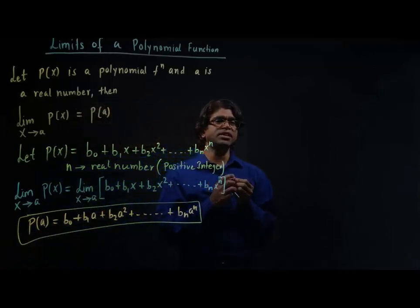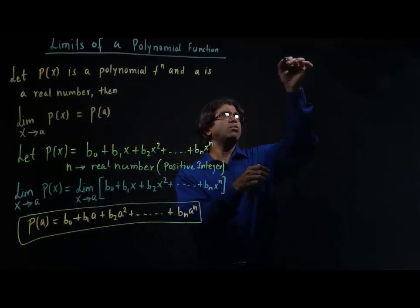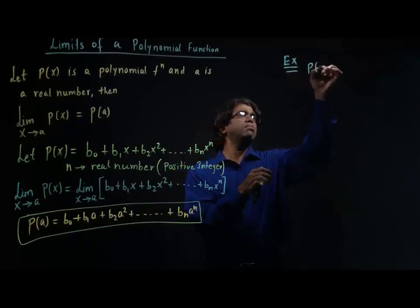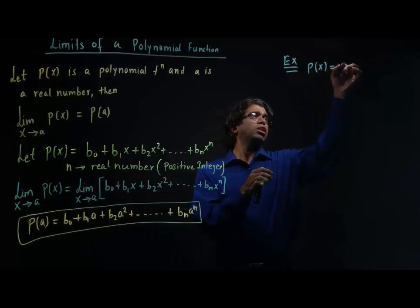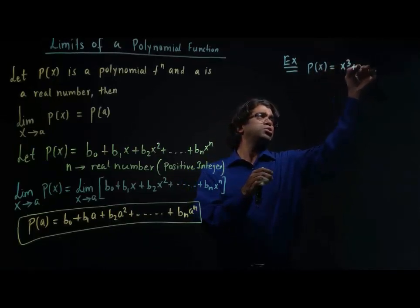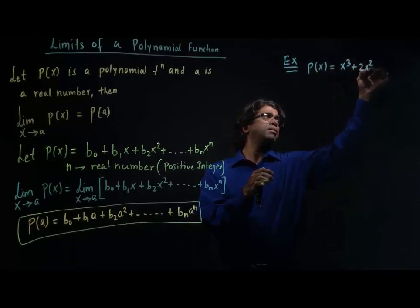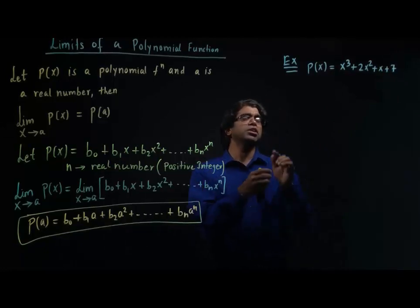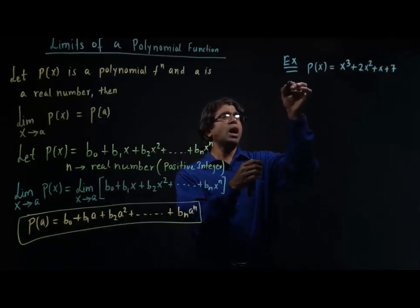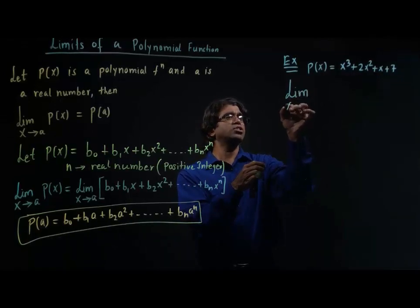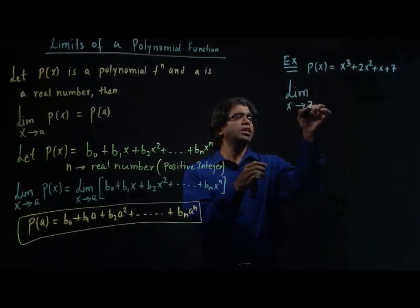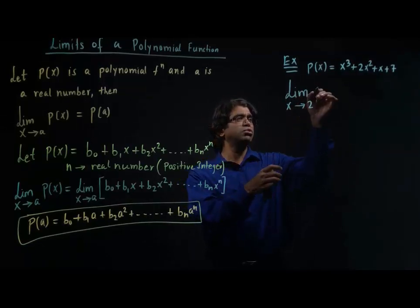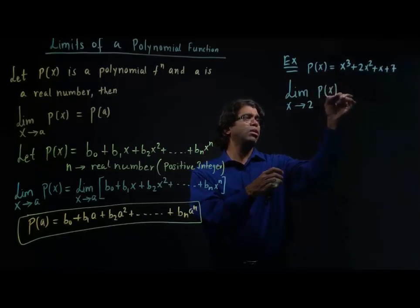Now let's consider an example. My example is: p(x) is a polynomial function equal to x cubed plus 2x squared plus x plus 7. This is my polynomial function, and I want to find the limit of this polynomial function as x tends to 2. We need to find the limit x tends to 2 of p(x).